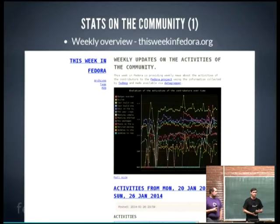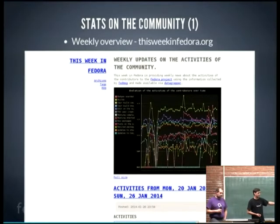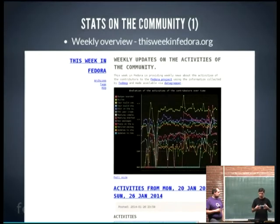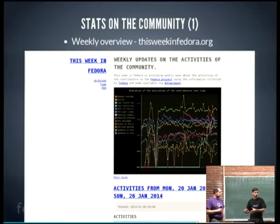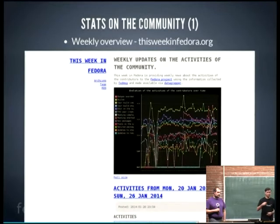Using that history we can do statistics. There is a cron job that runs every Monday at 10 o'clock, retrieves all messages from the previous week, and presents information like: how many builds were there last week compared to the week before, how many people created an account in FAS, how many badges were given, how many updates were pushed, how many people tagged in FedoraTagger. It outputs an SVG graph showing the trends for the different categories.